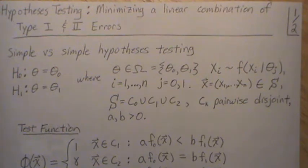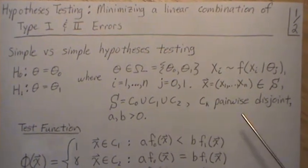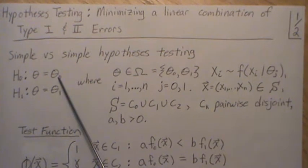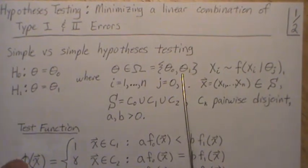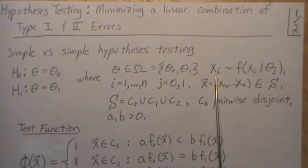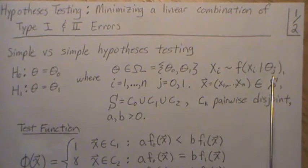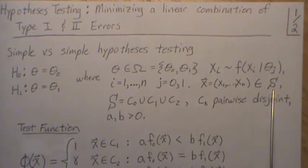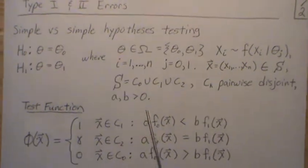Hello, this is the next video in a playlist that I'm calling hypothesis testing. In this video we're going to look at a test that minimizes a linear combination of the Type I and Type II errors. We're initially going to do this for simple versus simple hypothesis testing. That means that the null region is one point and the alternative region is one point. The parameter space omega has two points. We're going to assume that the data follows some sort of distribution indexed by the unknown parameter. The sample space is capital S. We have three regions that are all pairwise disjoint, and we have two constants a and b that are positive.